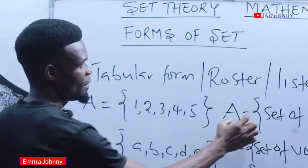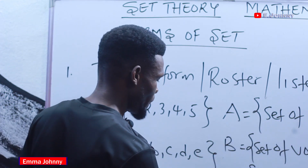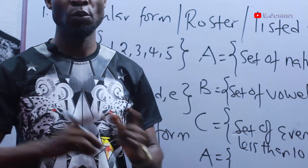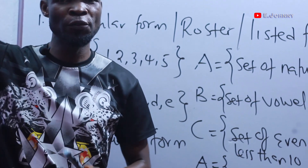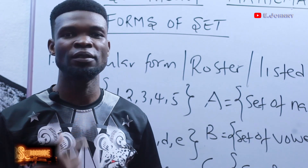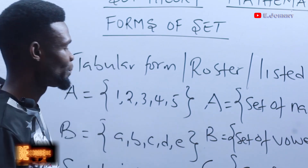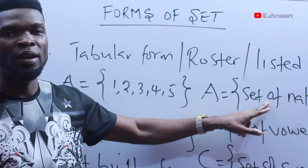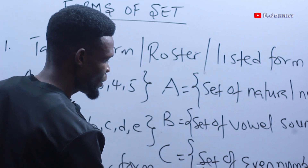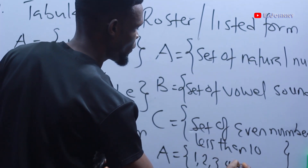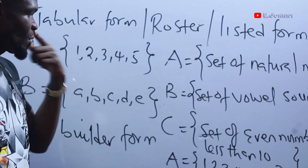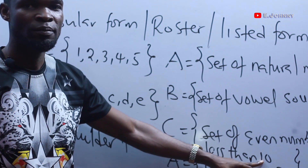Let's pick the first example: a set of natural numbers. We know that natural numbers begin from 1 and go to infinity — you can count natural numbers forever. So unless there is a stated end, it continues to infinity. A set of natural numbers: {1, 2, 3, 4, 5, ...} going to infinity.